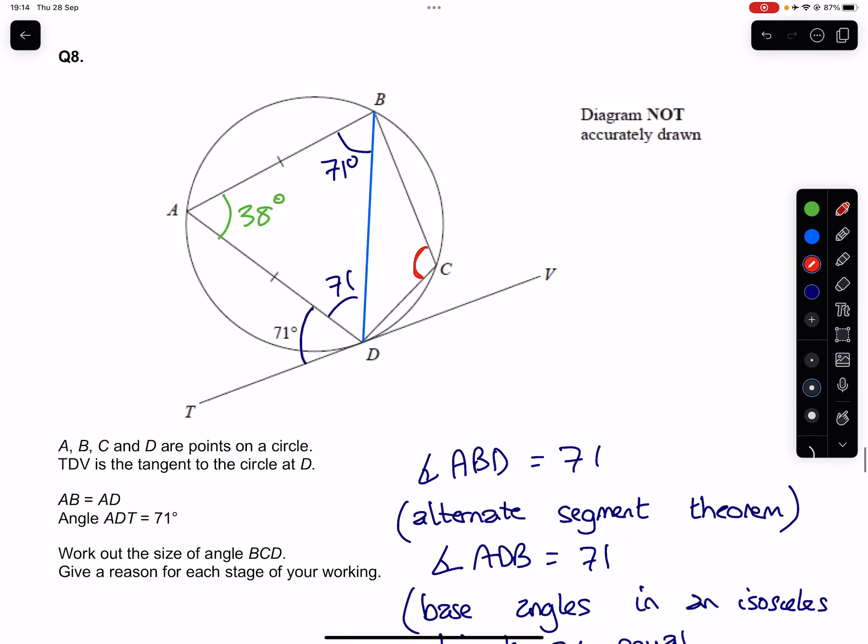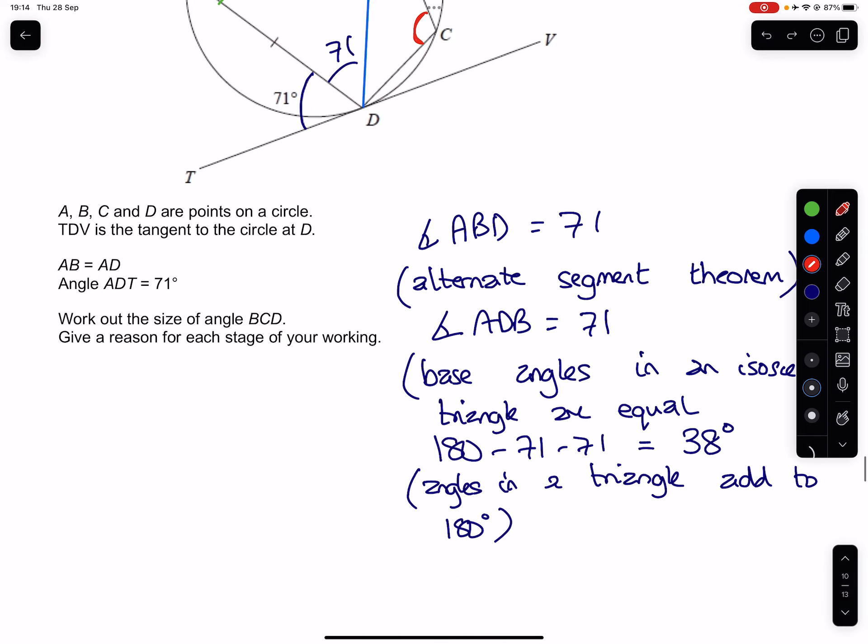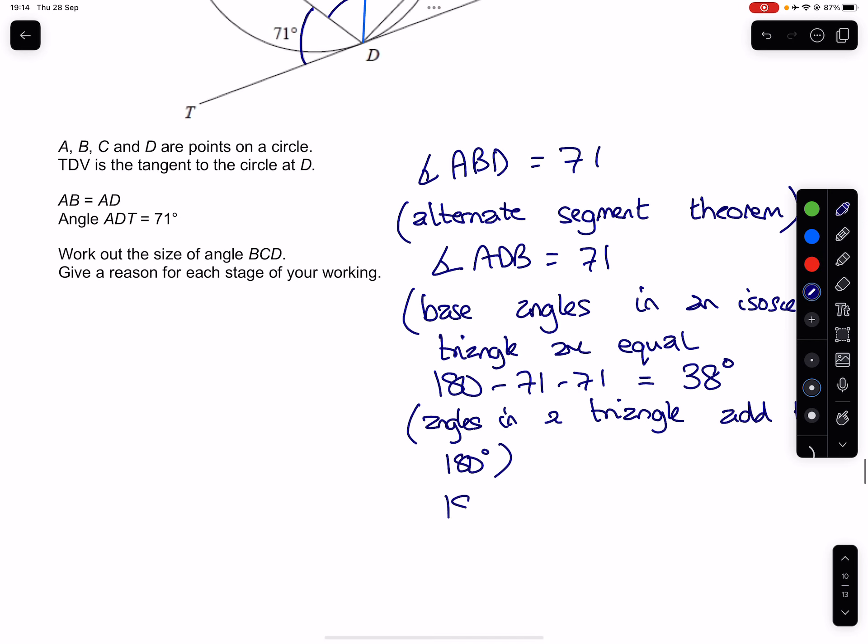And lastly, we have a cyclic quadrilateral here, which means that the opposite angles—the green and the red ones—are going to add up to 180. So we would take away this 38 from 180, giving us 142.